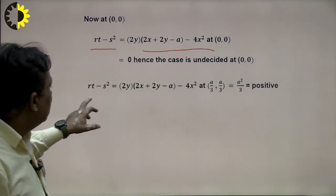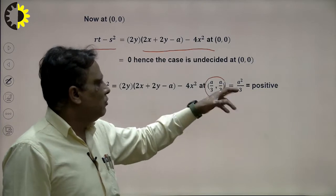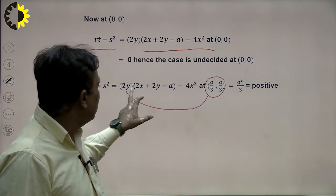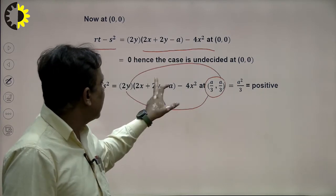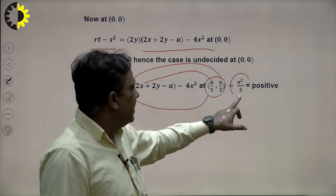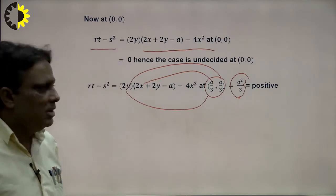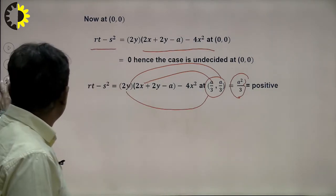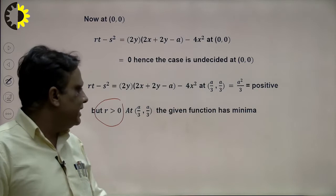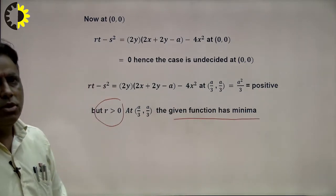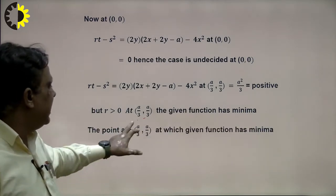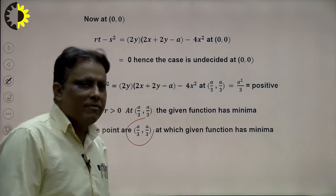At the second point (a/3, a/3): putting x = a/3 and y = a/3, the result is a²/3, which is definitely positive. So rt − s² > 0 and r > 0. Therefore, the function has a minimum value. The minimum value is found by substituting the coordinates (a/3, a/3) into the given function.